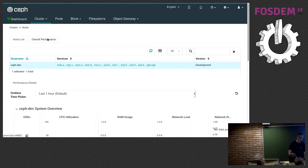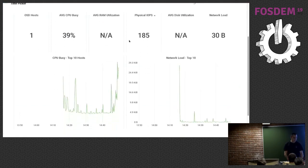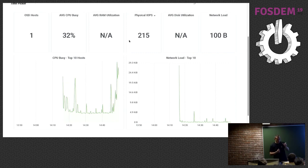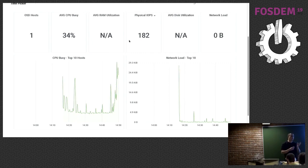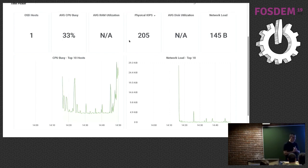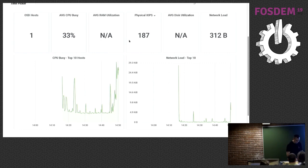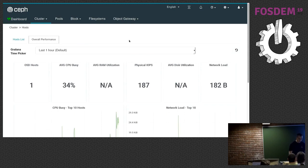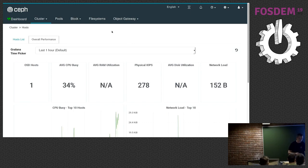We also have an overall performance view with metrics aggregated across all nodes in your cluster — top 10 busy hosts, top 10 network load. Especially in a large cluster, you don't want to click on each individual host to check metrics, so it's important to aggregate numbers without overwhelming the user. We previously had a Grafana dashboard that tried to plot each OSD performance metric in a single graph and that didn't scale well — the browser crashed running out of memory.